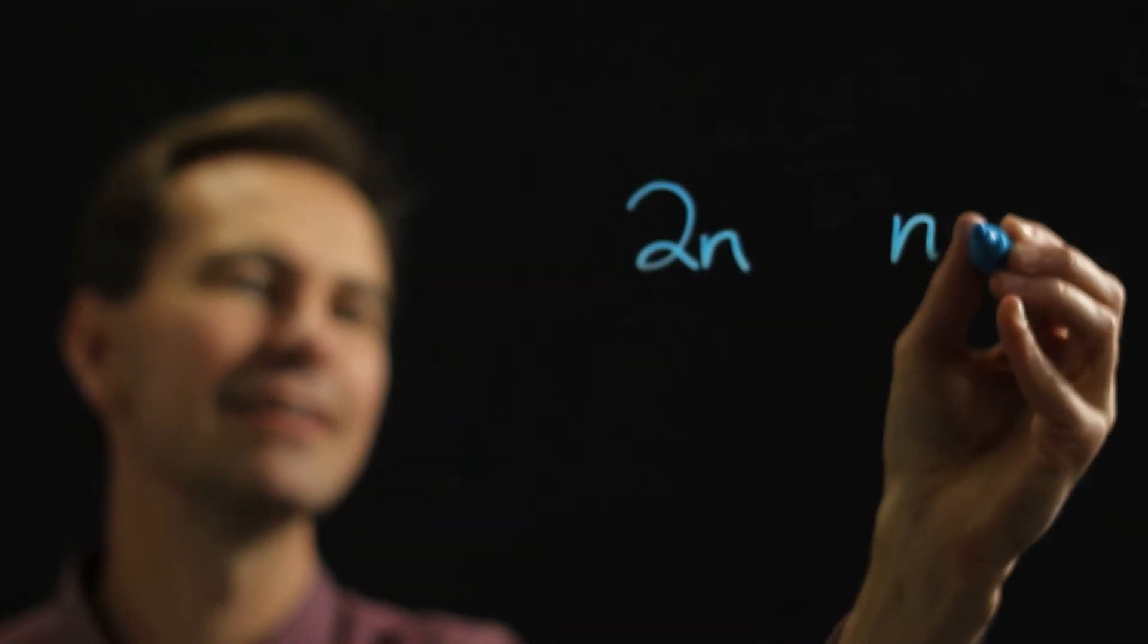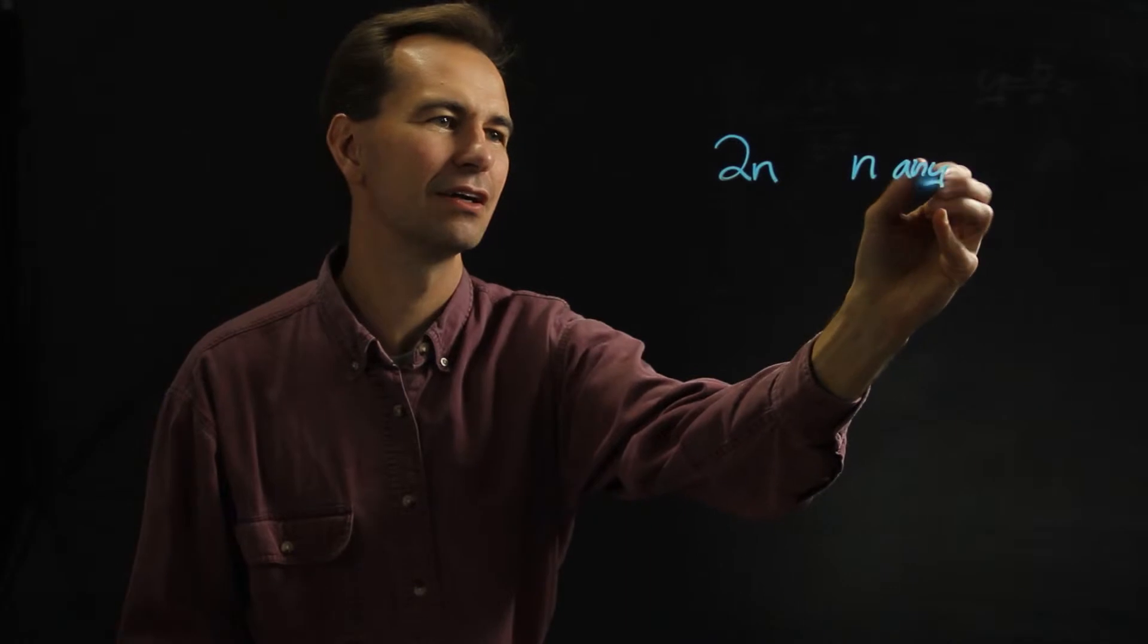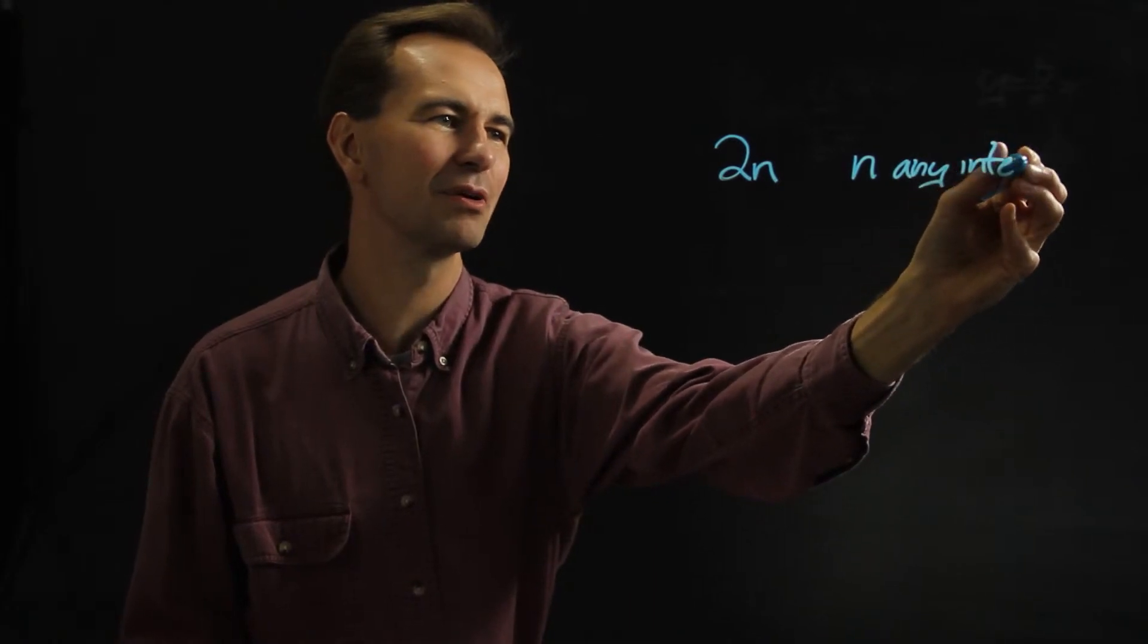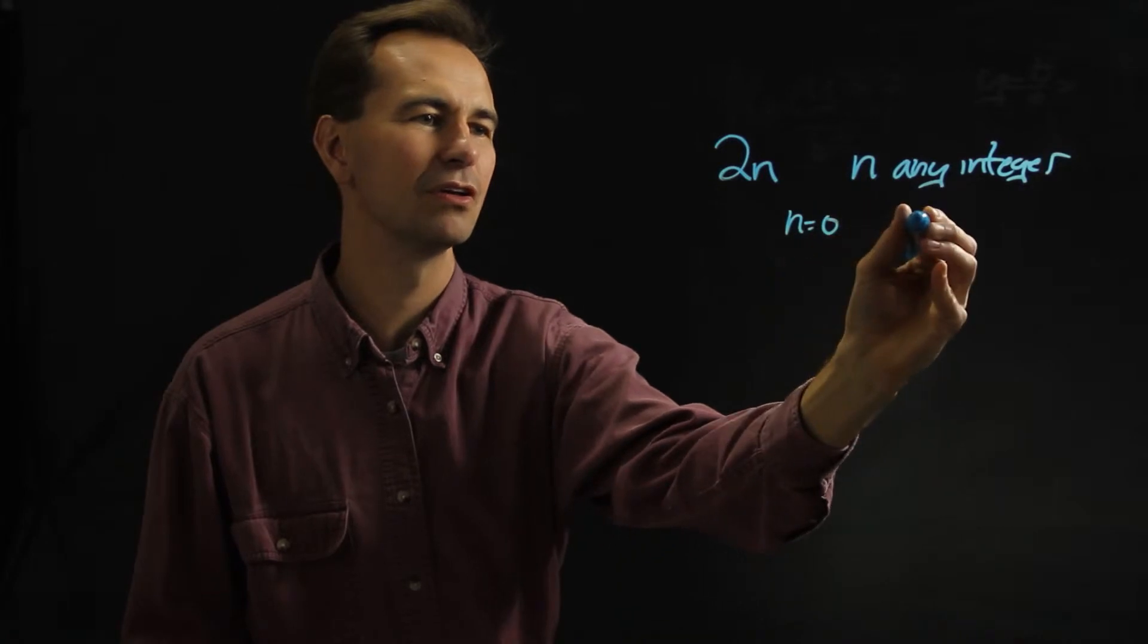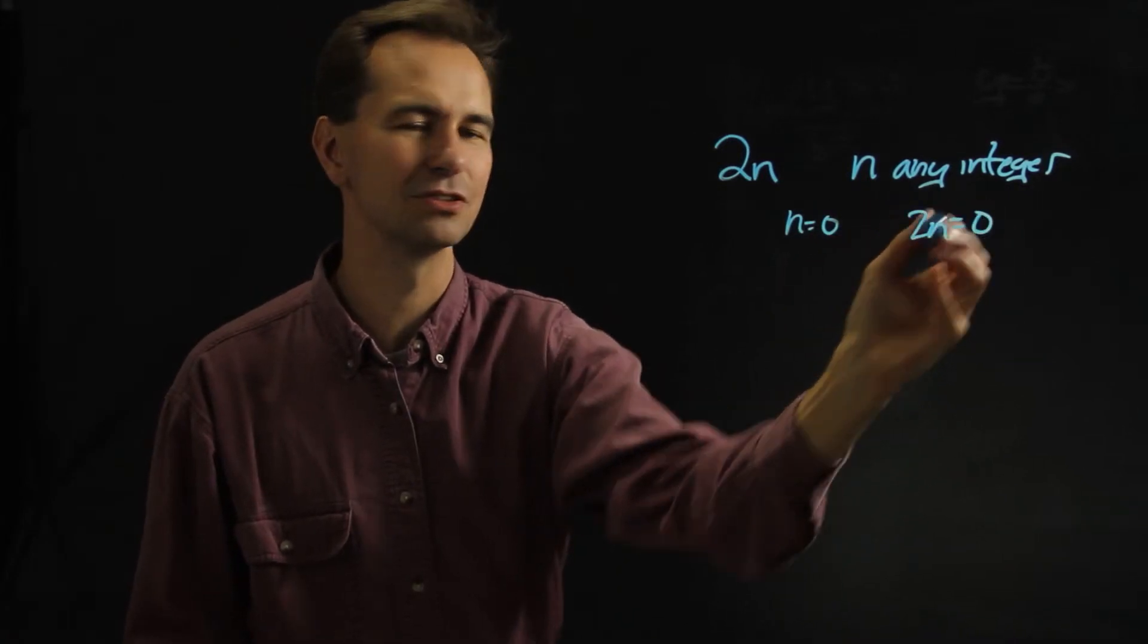If you write 2n where n is any integer, then notice what that means. That means that if n is 0, then 2n is also 0.